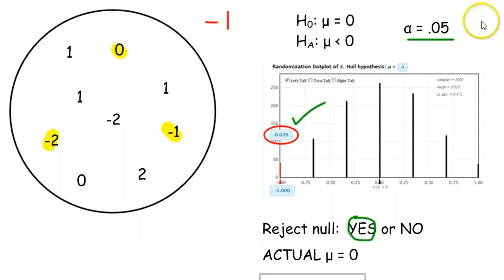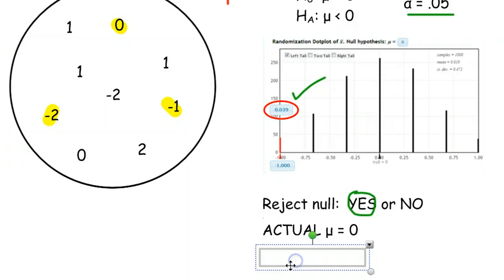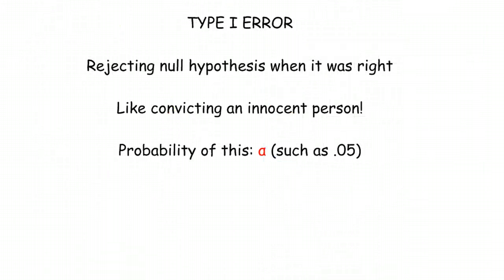When we reject, and we were not supposed to reject, the null was true, but we rejected anyways, that's called a Type I error. There's going to be a Type I and, surprise, a Type II coming up soon. But let's start out with the Type I.